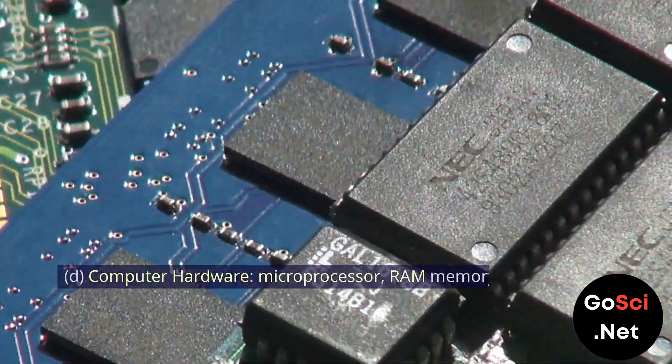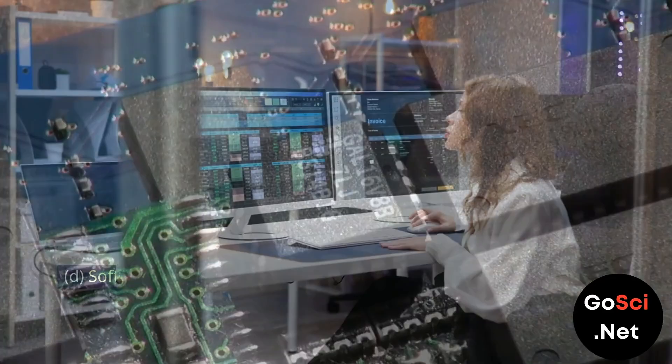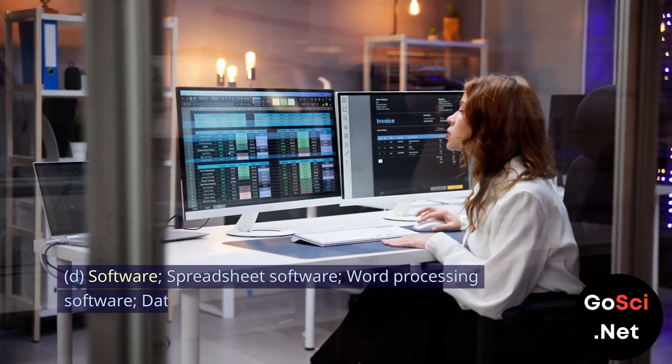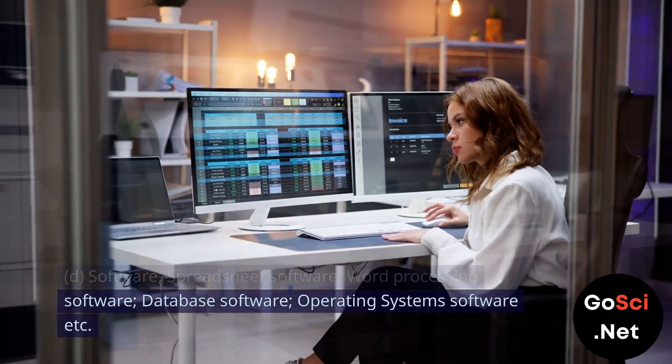D, computer hardware: microprocessor, RAM memory, ROM memory, SSD drives, etc. Software: spreadsheet software, word processing software, database software, operating system software, etc.